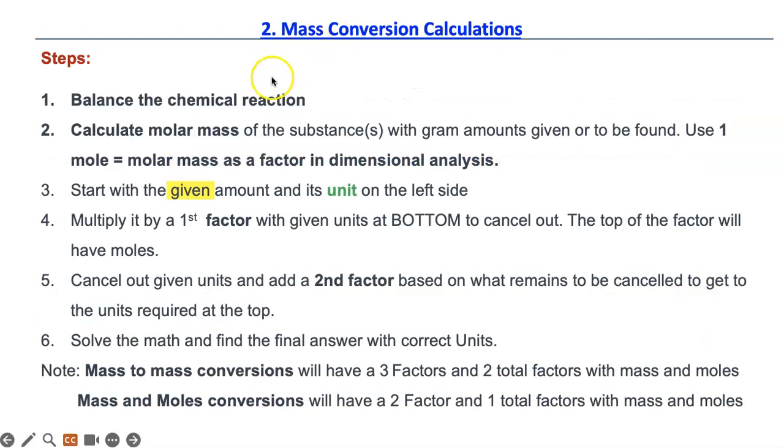Here are the instructions. If you want to write them down, that's fine. But all you need to know is you start with a balanced chemical reaction and then you need to calculate the molar mass for the substances whose grams is given or whose grams you have to find. And then you will use the one mole divided by molar mass or molar mass divided by one mole factor in your calculation. And you also start with the given unit and the given value and then the steps are the same. They self-guide based on what you cancel.